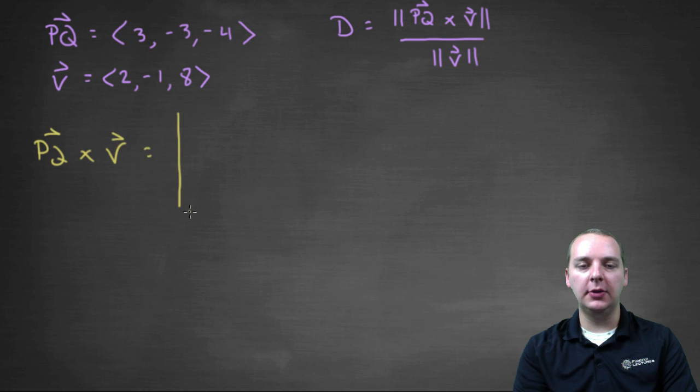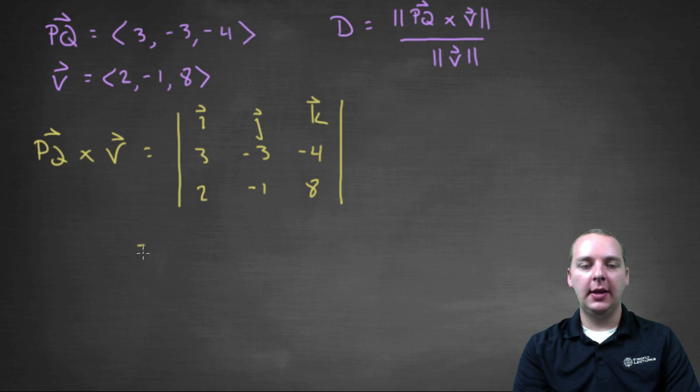We do that by using a three by three determinant. We'll have i, j, k on the top row. We'll have three, negative three, negative four on the second row, and two, negative one, eight on the third row. And I'm going to run through some of this algebra kind of quickly just to speed things along a little bit.